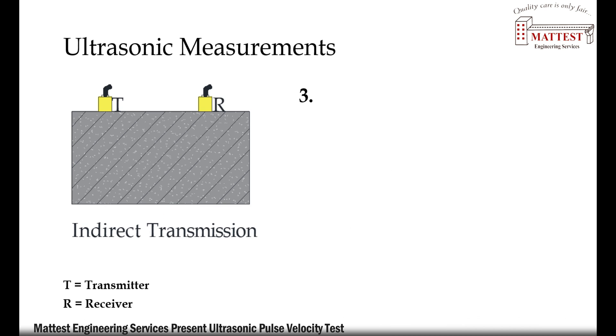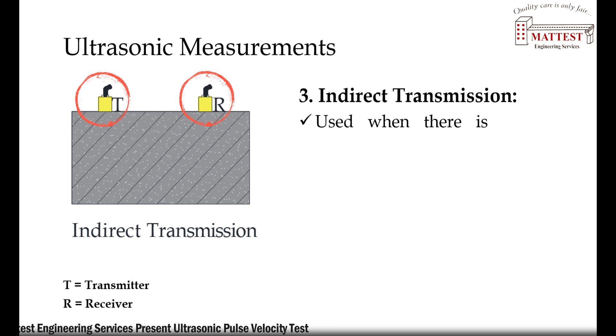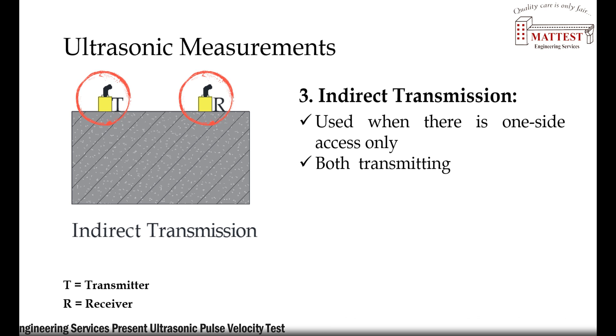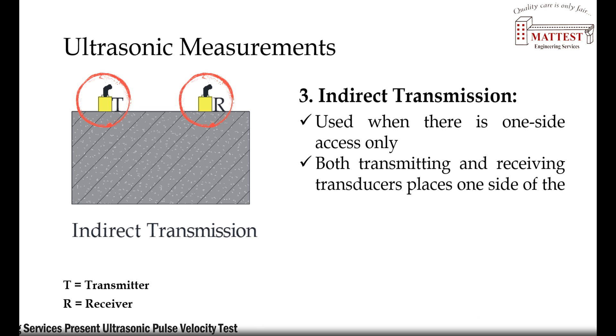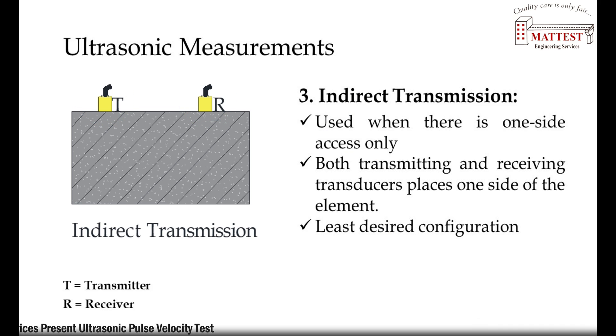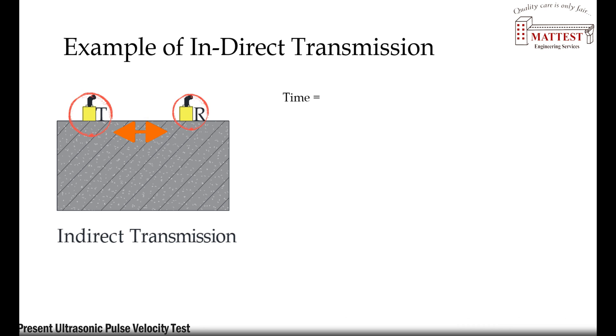Third, indirect transmission: used when there is one side access only. Both transmitting and receiving transducers placed on one side of the element. Least desired configuration. Example of indirect transmission.